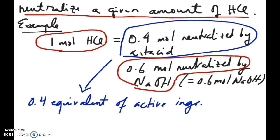We know though that that amount of active ingredient will neutralize a given amount of HCl. So for example let's say we use one mole HCl in our experiment in total and let's say we know that 0.6 mole of that HCl is neutralized by NaOH. That must mean that one minus 0.6 which is 0.4 moles is neutralized by the antacid.